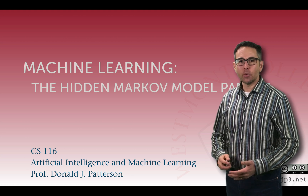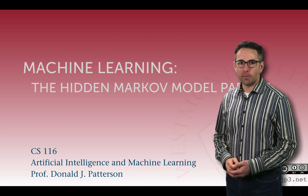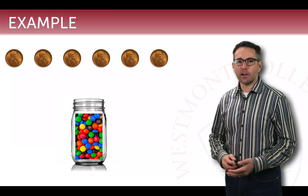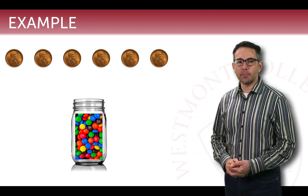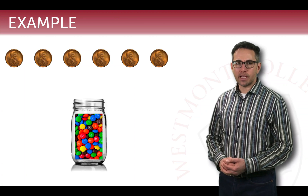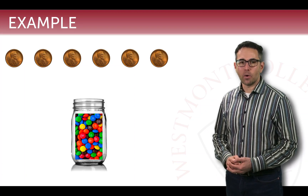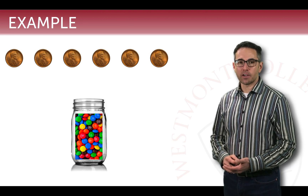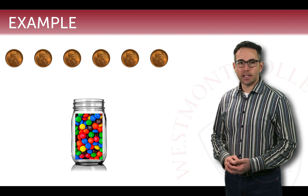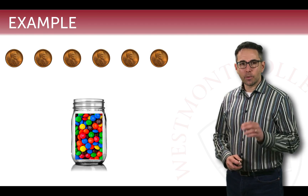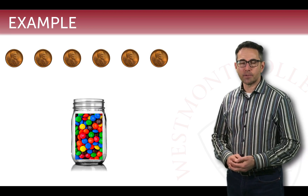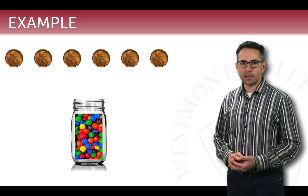Welcome to lecture seven in a sequence of videos describing the hidden Markov model, its motivation, its representation, and how we reason with it. In our last video, we talked about two different scenarios: one with a coin being flipped and observing from behind a curtain whether it was heads or tails, trying to understand whether it was a fair or biased coin. We also imagined a scenario where there were lots of different jars of M&M candy, each with a different color, and periodically we would draw one candy from a jar and line them up, with those colors becoming the observations. Both of these can be represented as hidden Markov models.